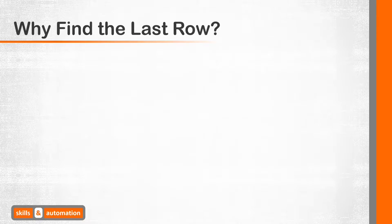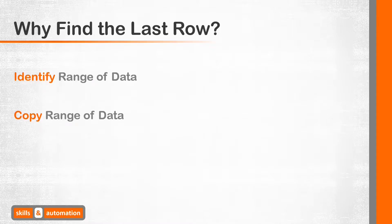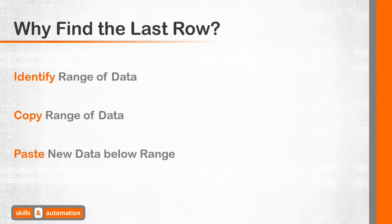One of the most common tasks in VBA is finding the last used row of a data range. Three common use cases are: first, identify the full range of data to perform some task over, such as looping over the data or changing formatting. Second, copy and paste the range of data elsewhere, for example into another worksheet or workbook. Third, paste new data at the bottom of the existing data range — that is, find the first unused row below our data and paste new data there. We will cover each of these three examples in this video.